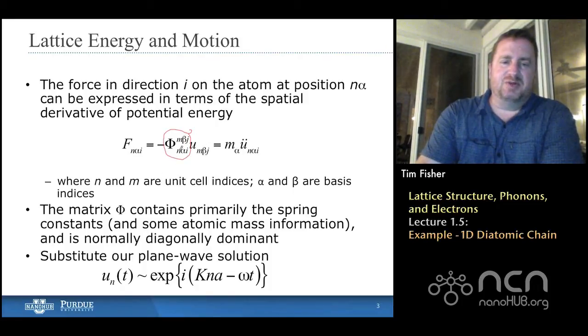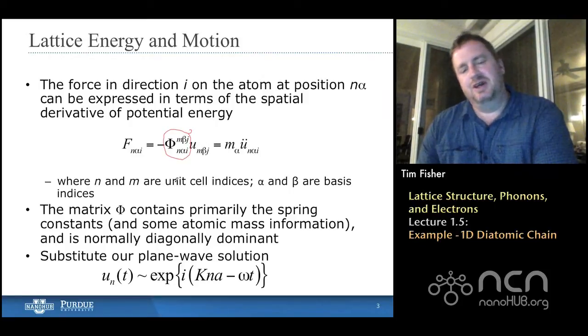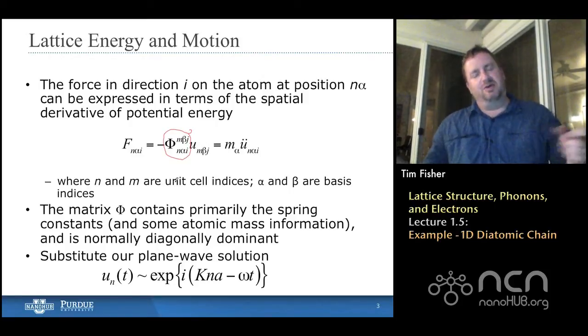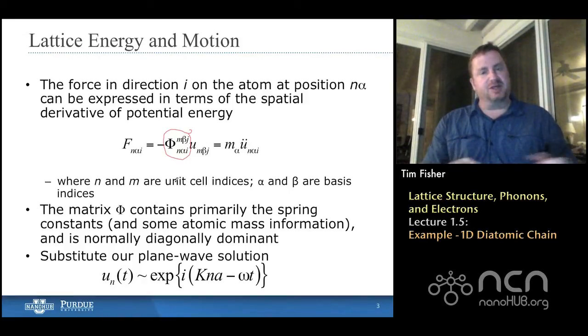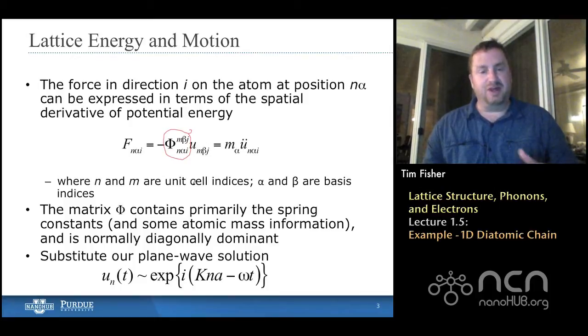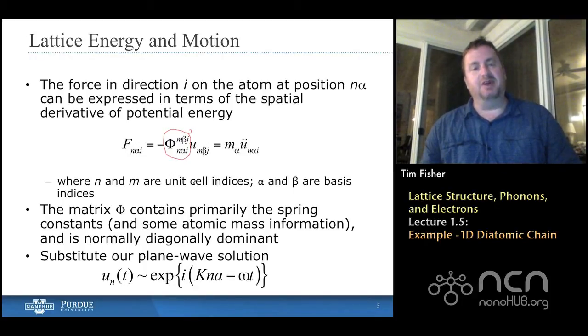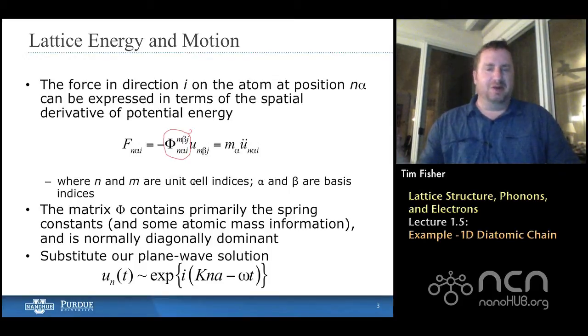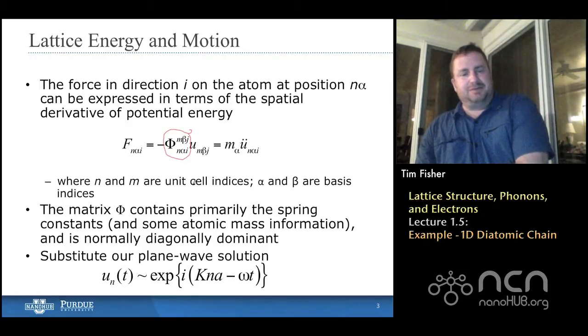So let's go through these subscripts and superscripts. The M's and the N's, those represent unit cell locations, the indices of the unit cell. So now when we have the possibility that a force can span across unit cells, we need to make sure we're keeping track of which one is which. And then alpha and beta are the basis indices. So that's within a unit cell. Are we talking about the first atom, the primary atom, or the basis atom? So we have to keep track of that as well. Lastly, I and J are the dimensions, or directions rather. You can think of those as being the three Cartesian directions for a three-dimensional problem. We're just going to still use one dimension today, but this is where you would add the dimensionality.